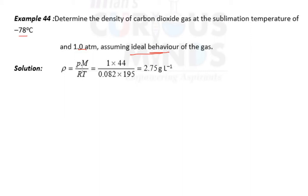So density is PM by RT. Pressure we have taken in atm, molecular mass in grams, 44 grams for CO2. CO2 is 12 plus 2 into 16 for oxygen atomic mass, which is 44.